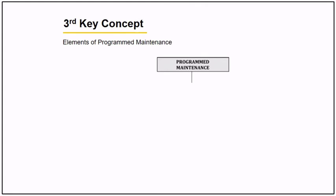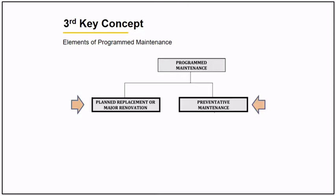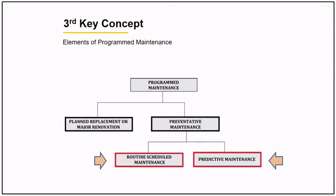The third concept is the elements of a maintenance program. It is composed of land replacement or major renovation, and preventive maintenance. Under preventive maintenance are routine scheduled maintenance and predictive maintenance.